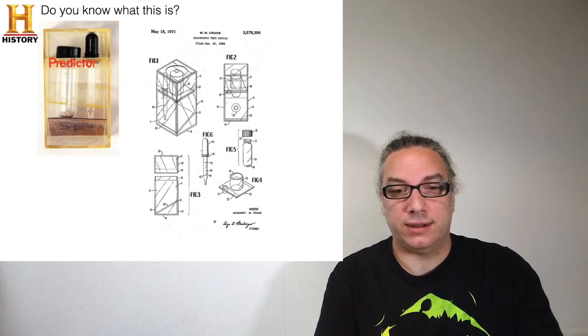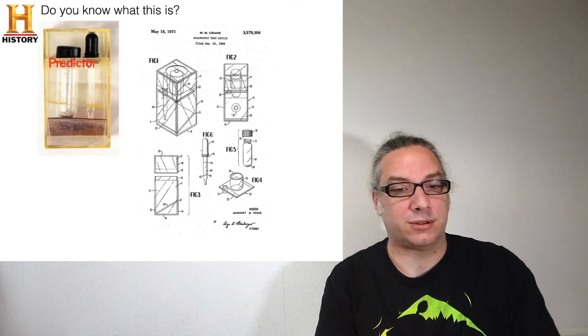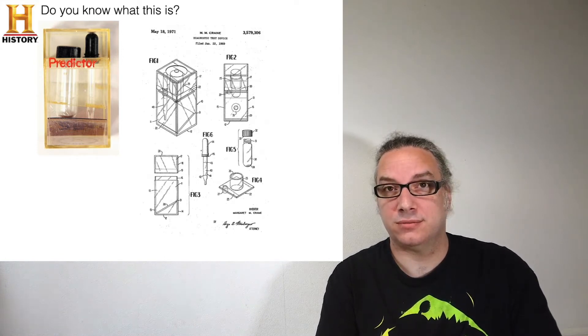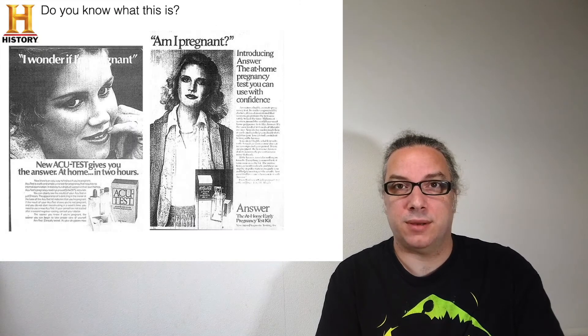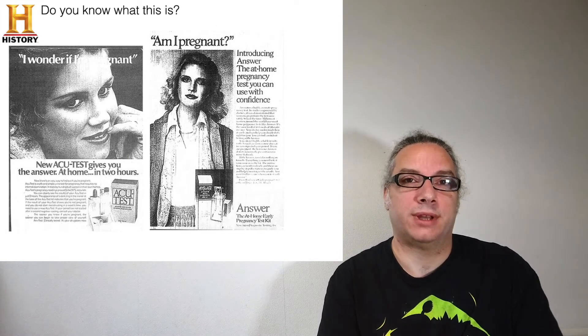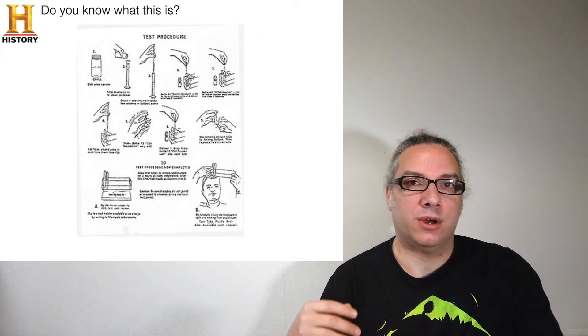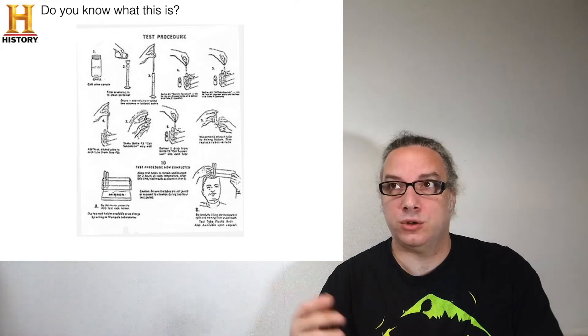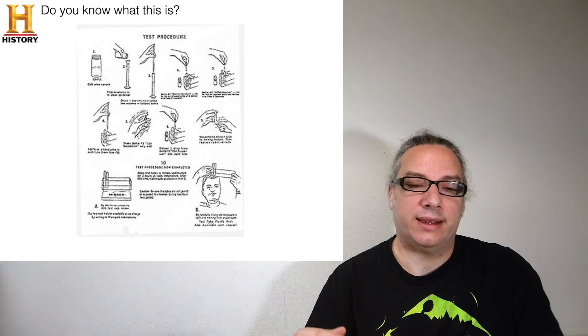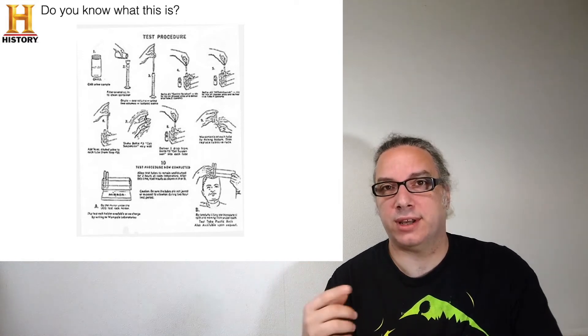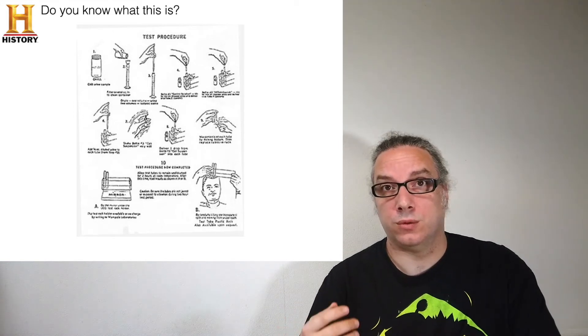This one was a patent filed in 1971 and it's called the Predictor. Have you ever seen one of those? Most probably not, but this is actually a pregnancy test. This one was the first patented pregnancy test. It worked in a really weird way in which you have to collect your urine, you need to mix it with different chemicals, leave it overnight at room temperature, and then the next day you can check if there is a ring formed or not. It was really difficult to use.